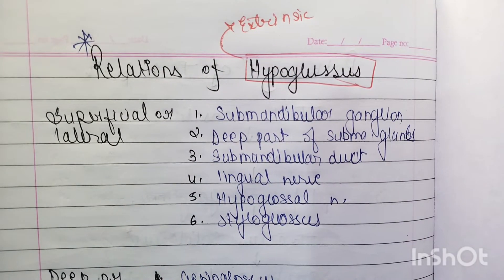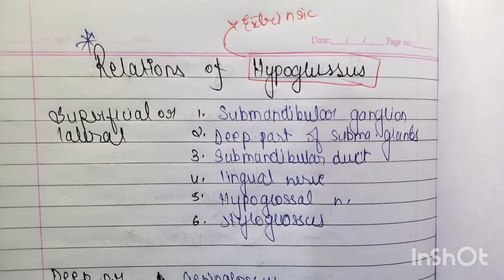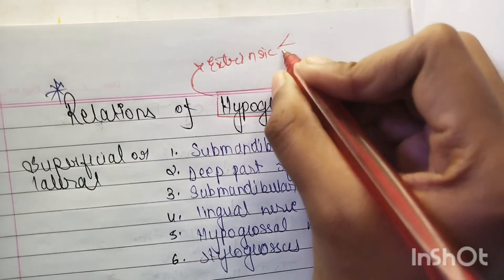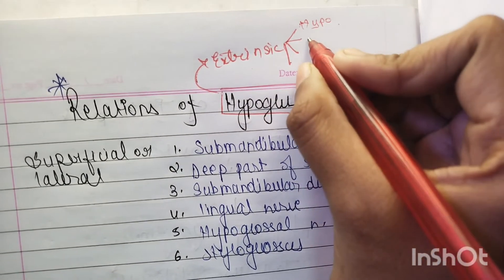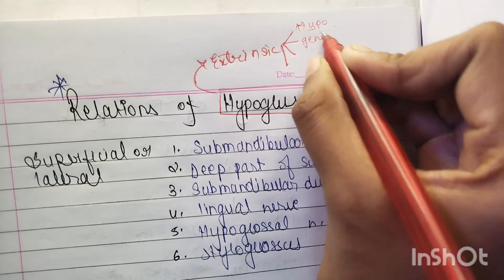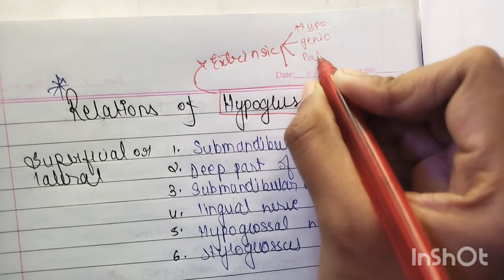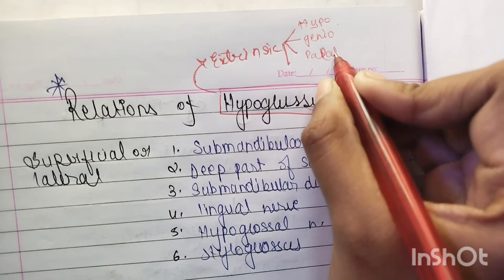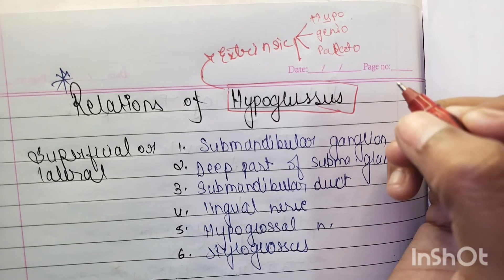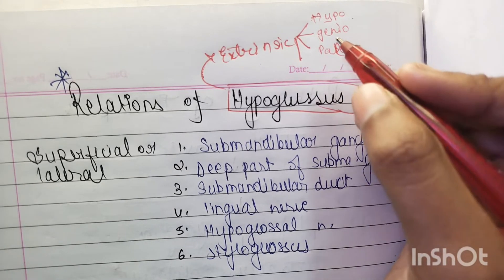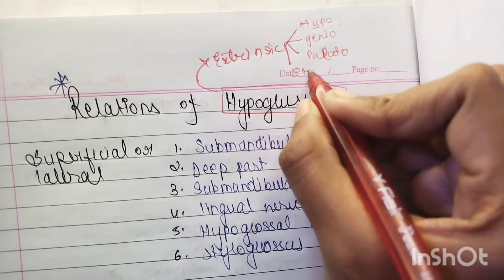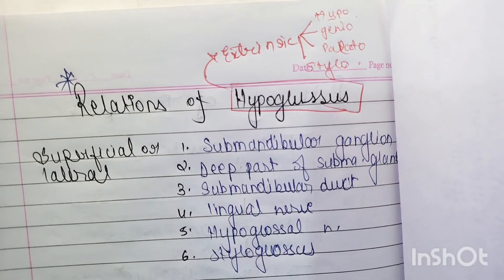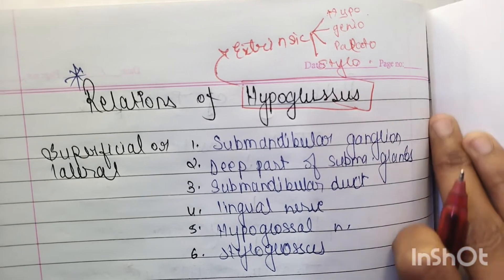We have two kinds of muscles in the tongue: intrinsic and extrinsic, and hyoglossus is one of the extrinsic muscles. The four extrinsic muscles of the tongue are: genioglossus, hyoglossus, palatoglossus, and styloglossus.